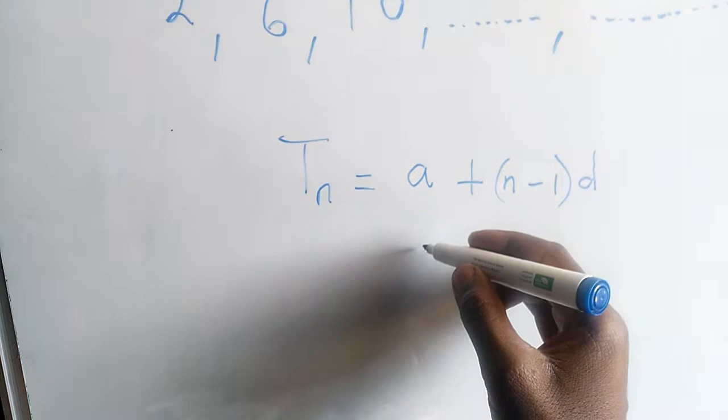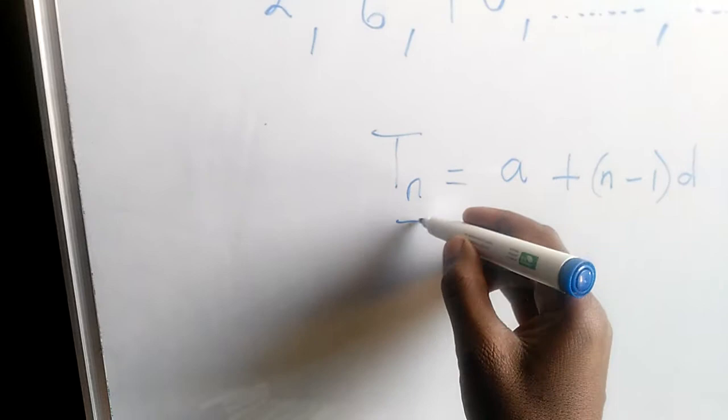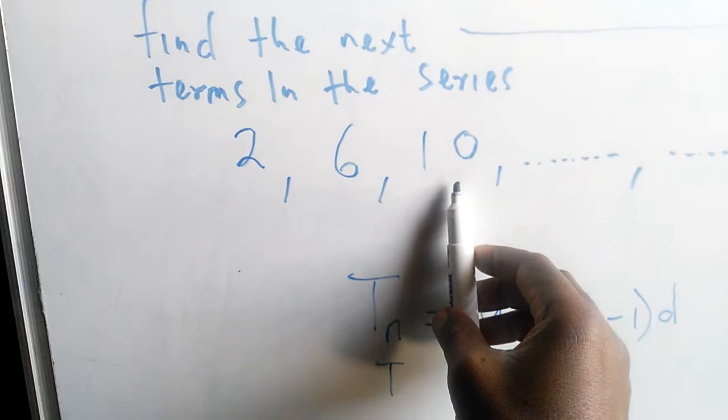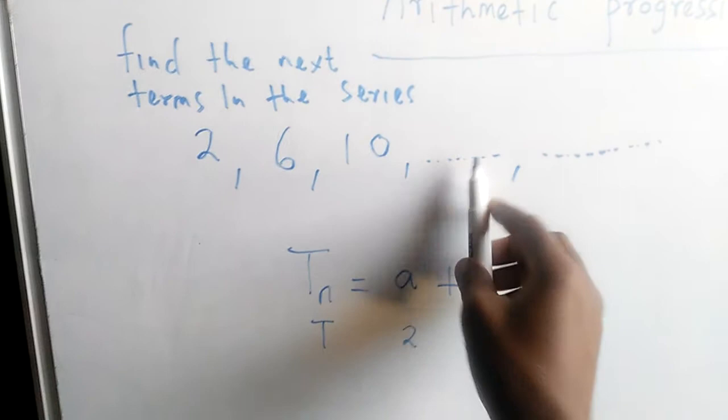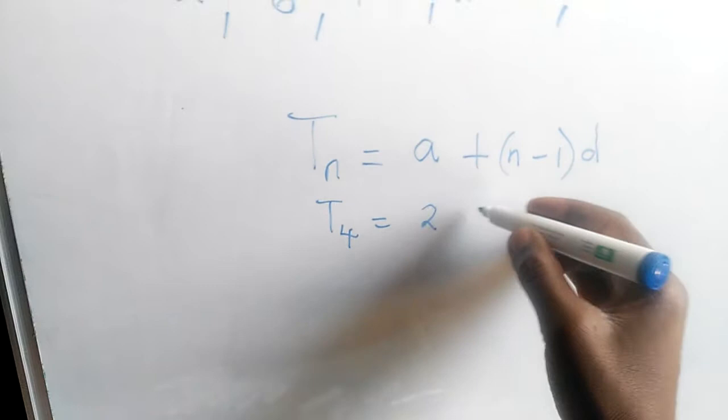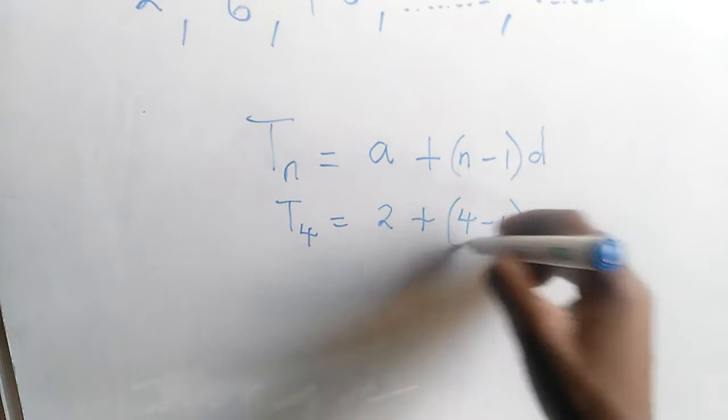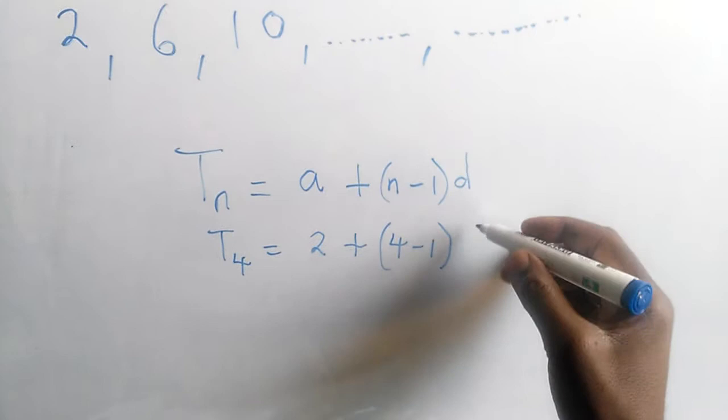So if our A is our first number, look at the first number there — it's 2. The term that I want: if this is term number 1, term number 2, term number 3, this would be term number 4. I want term number 4, so T of 4 equals first number plus (4 take away 1) multiplied by the common difference of 4.